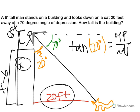So, now we can write this as the tangent of 20 degrees is equal to our opposite, which is 20 feet, over adjacent, which is unknown.